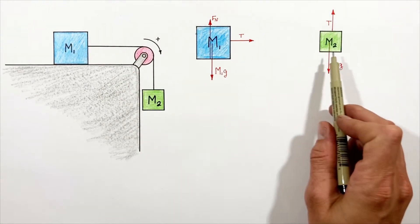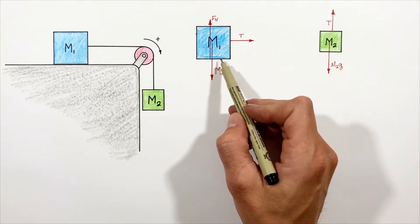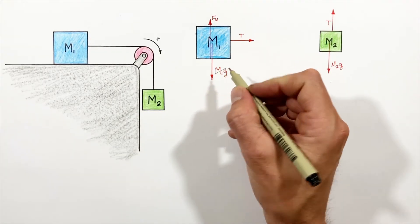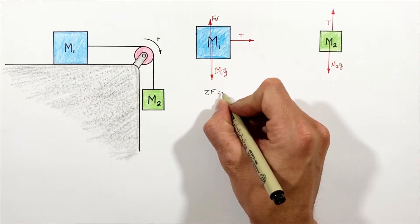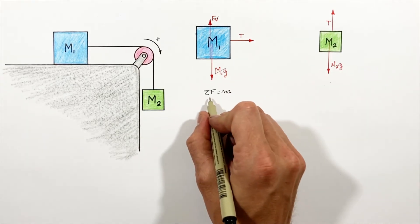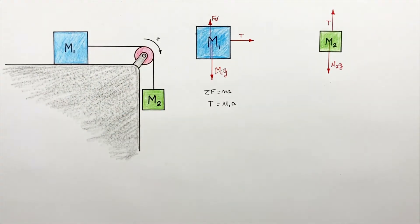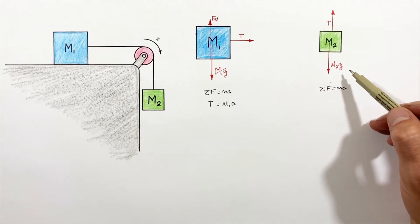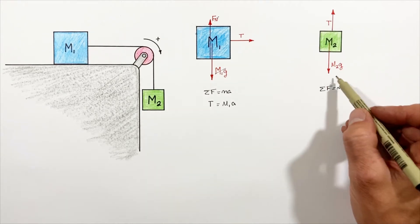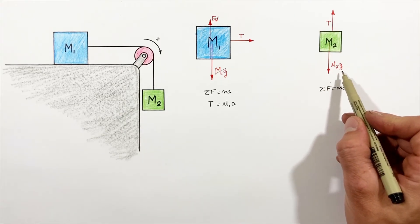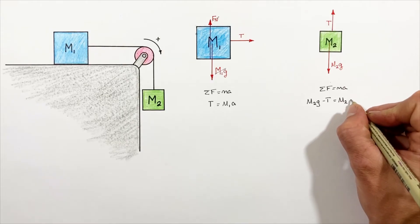Now we apply Newton's second law to each block individually. For the block on the table, gravity and the normal force cancel, so the net force is simply the tension. Writing out Newton's second law — sum of all forces equals ma — we get T = m1a. Applying Newton's second law to the hanging block, we have two competing forces. Taking downward as positive, m2g is positive and tension is negative, giving us m2g − T = m2a.